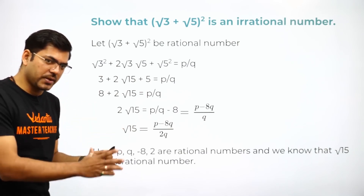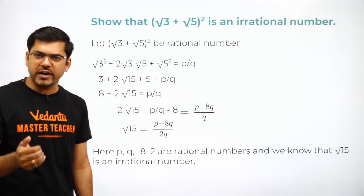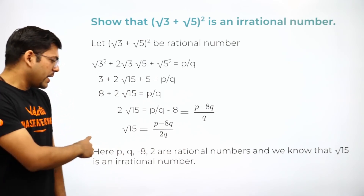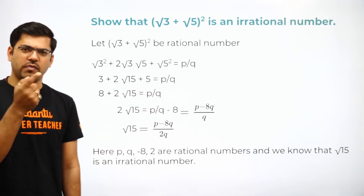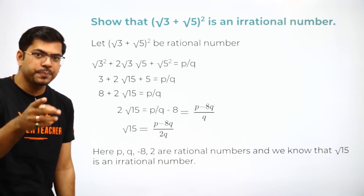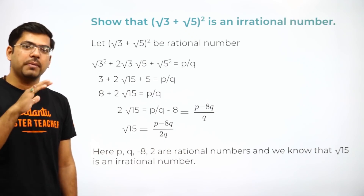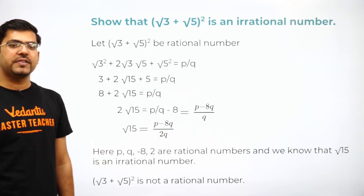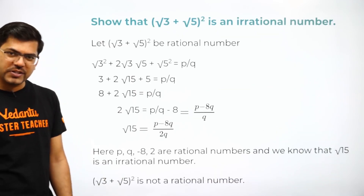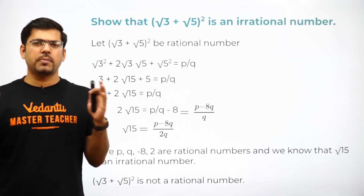Here, p, q, 8, and 2 are all rational numbers, and rational operations on rational numbers always give a rational result. So the right-hand side (p − 8q)/(2q) is rational. But we know that √15 is not a rational number. This is a contradiction, so our assumption was wrong. Hence √3 + √5 is an irrational number.